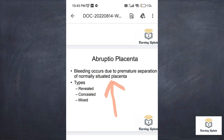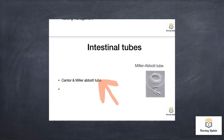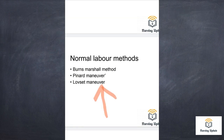Which one of the following is an intestinal tube? The answer is the Miller-Abbott tube — this is in the notes. Then, delivery of the baby in complete breech presentation — delivery of the after-coming head — the answer is the Burns Marshall method. This is also covered in the notes.